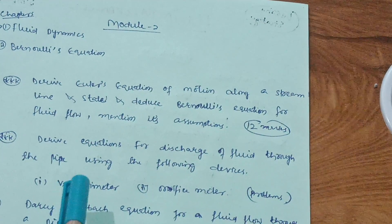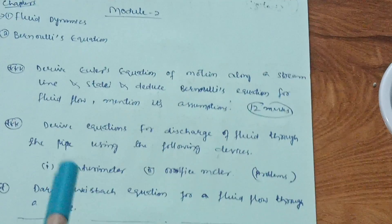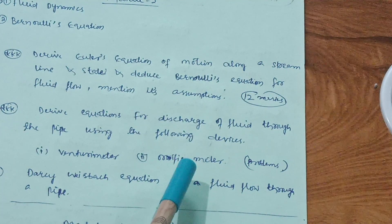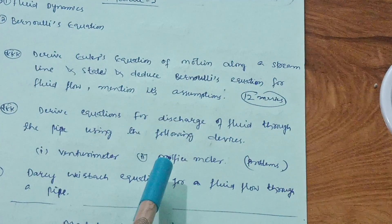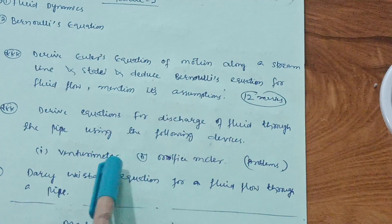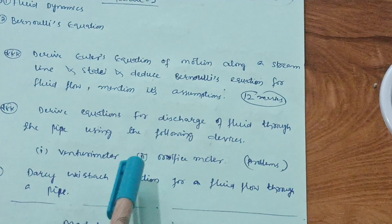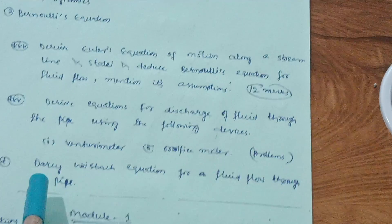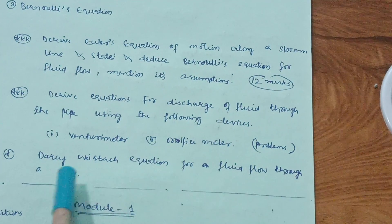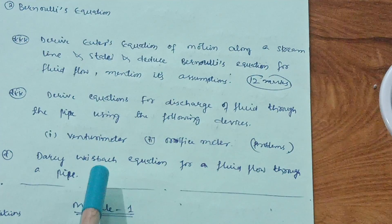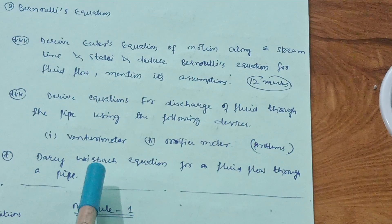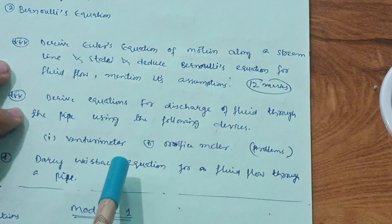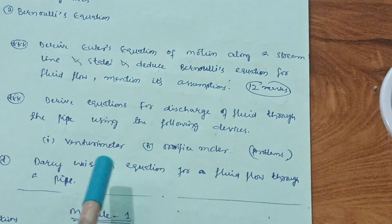The venturimeter and orifice meter derivation is a super important 10-mark (sometimes 8-mark) question. Also try problems on venturimeter and orifice meter — deriving the equation will help you understand how to tackle the problems. The third definite question is the Darcy-Weisbach equation for fluid flow through a pipe. Problems on pitot tubes and rectangular notches may also appear.